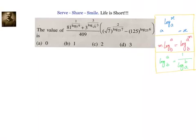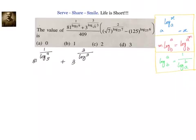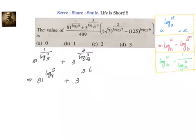What we have here: 81 to the power of 1 by log₉2 base 5, plus 3 to the power of 3 divided by log₃2 base √6. First, we'll take these logarithms to the numerators, so it will become 81 to the power of log₅ to base 9, plus 3 to the power of 3 into log of √6 to base 3.